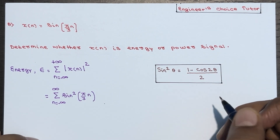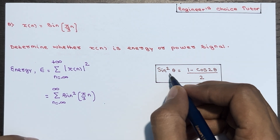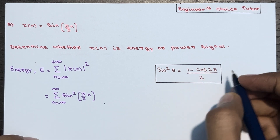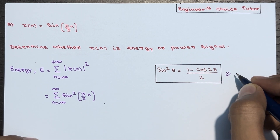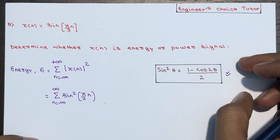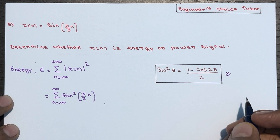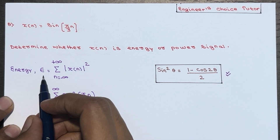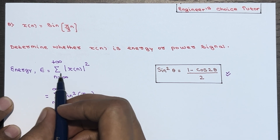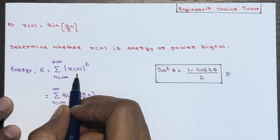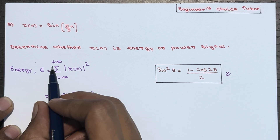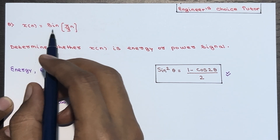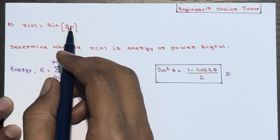We'll use the trigonometric formula: sin²θ = (1 − cos2θ) / 2. I've kept it here for your reference. We already know that the energy E of a discrete-time signal x(n) is defined as the summation of the absolute square of x(n) over the limit n ranging from minus infinity to plus infinity. We replace x(n) with sin(π/3 · n).